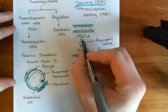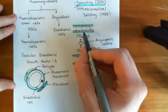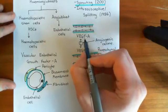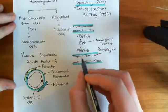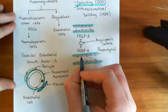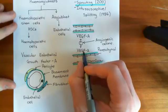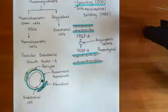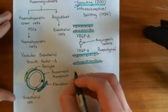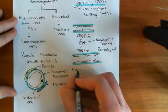The vascular endothelial growth factor A will diffuse over to these endothelial cells. Which endothelial cell is going to get the biggest dose of vascular endothelial growth factor A? Well, it's going to be this one here in this case. Basically, the first step is a process known as tip cell selection.